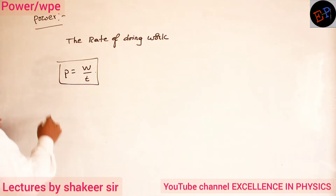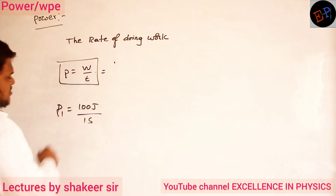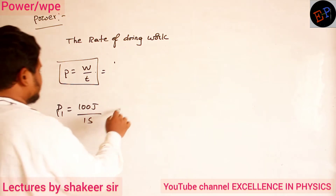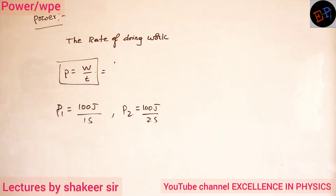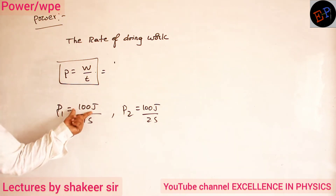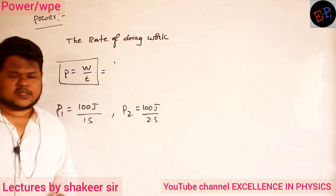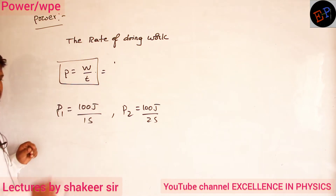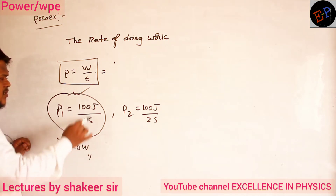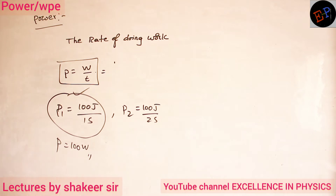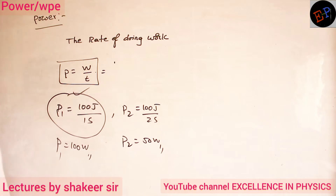For example, let P1 be 100 joules of work done in one second. Another person does the same 100 joules of work in two seconds. Work done is the same here — 100 joules — but time taken is one second for the first and two seconds for the second. So which person has more power? The first person. Here, power will be 100 watts. Joule per second is called watts. Then in the second condition, power is only 50 watts.